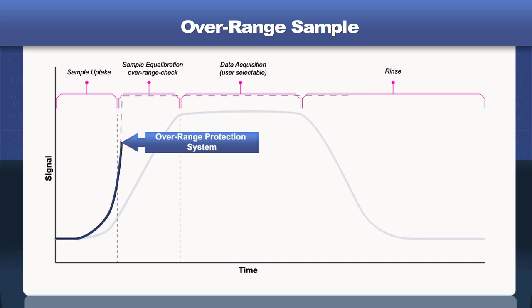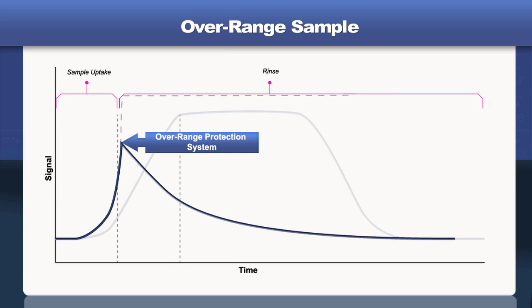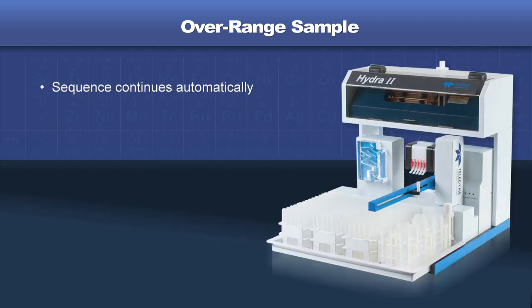When that happens, the equilibration and measurement steps are aborted, and the system is immediately flushed. That way, the next sample will be analyzed correctly, and the sequence can continue unabated.